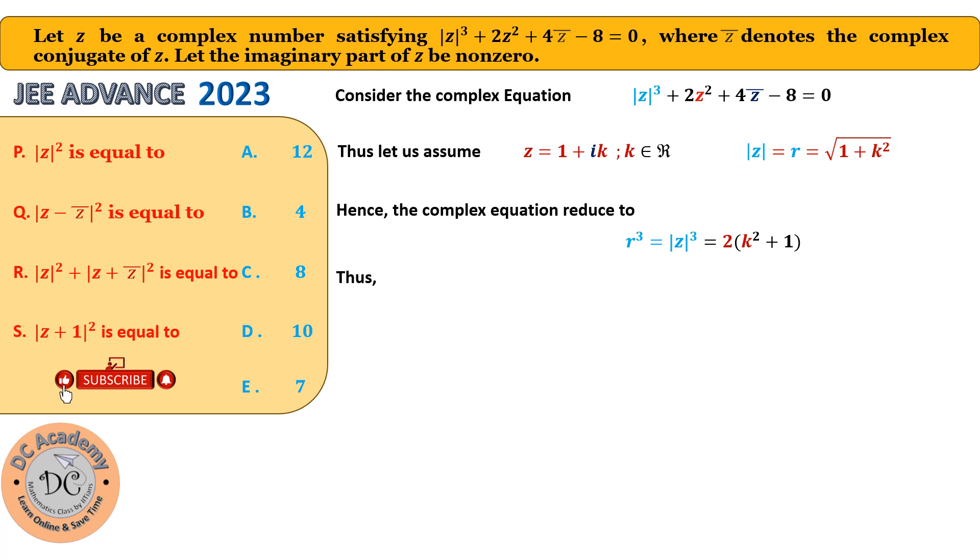Now observe that. We know what is R³. That is, (1 + k²)^(3/2) = 2(k² + 1). Again observe that k² + 1 for real k cannot be equal to 0 because it is always greater than 0. So if we cancel out that part from both sides, it gives (1 + k²)^(1/2) = 2. Squaring both sides, 1 + k² = 4 and k² = 3, which implies k = ±√3. So therefore, we obtained our complex number as z = 1 ± i√3.